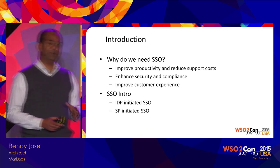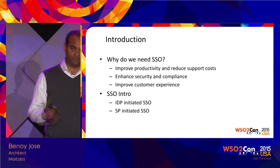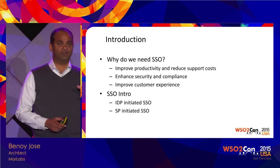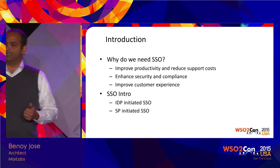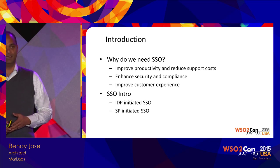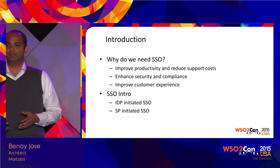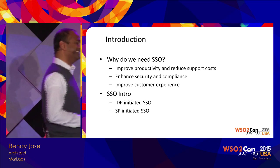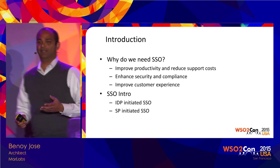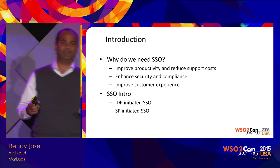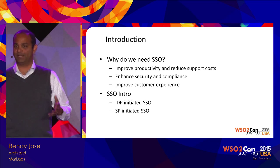There was a study done by a security company to understand the security posture of a company. One finding was they looked at all the passwords being used in the systems. The most common password being used — yes, that's right — and the next one is 12345, and then 123456, and then a bunch of dog names and cat names. That's what a typical password looks like.